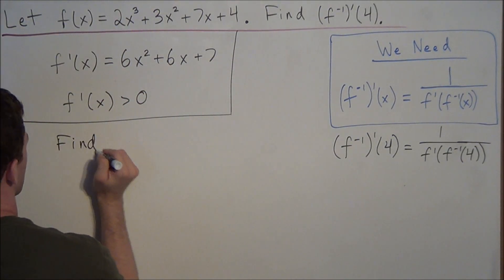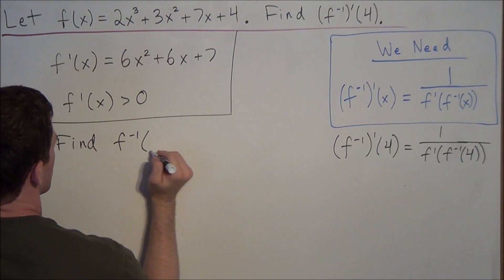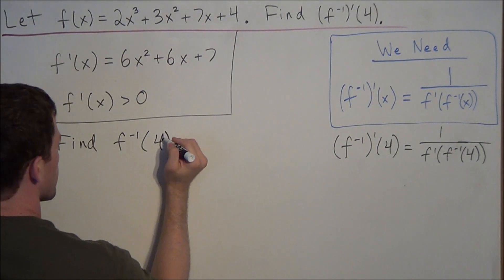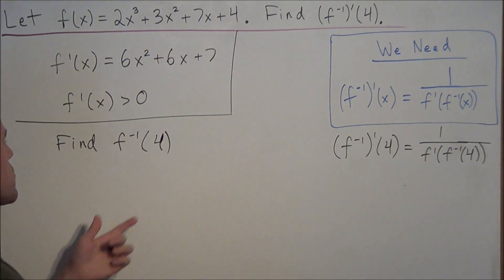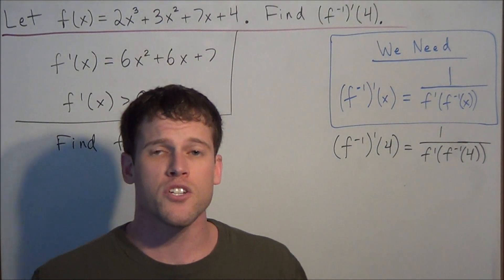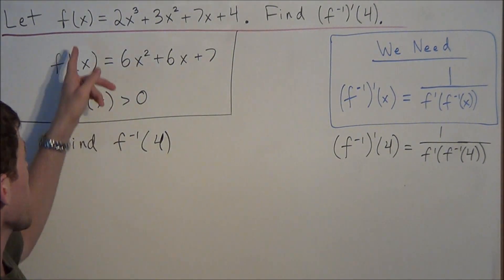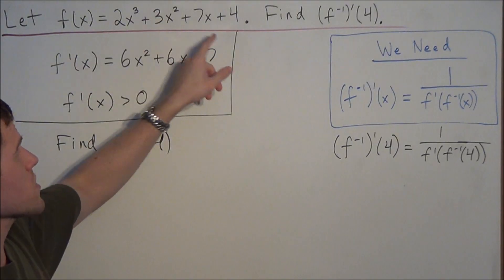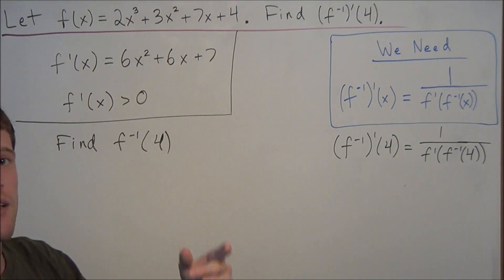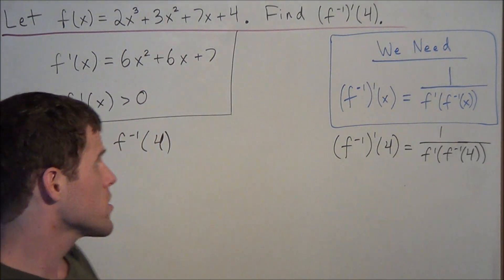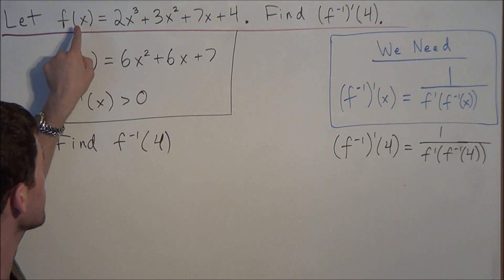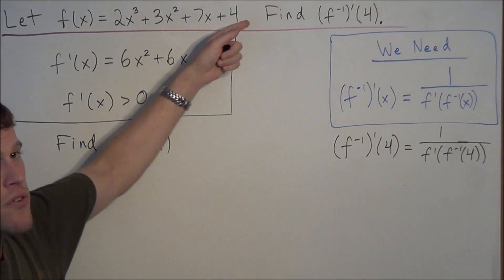And one way we could do this is we need to generate a 4 using our original function. So one thing you could notice is that the trailing piece, the constant term at the end, is 4. So if we plug in 0 into f of x, we're going to generate a 4.